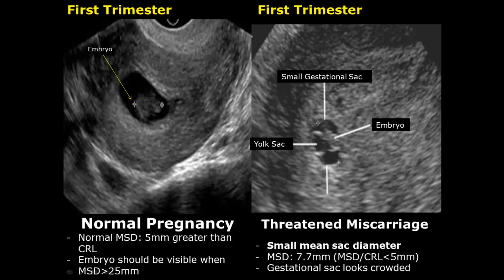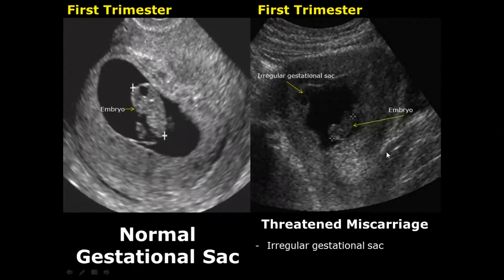The next feature is an irregular gestational sac. In the normal case, the gestational sac is very smooth, but in this case the inner walls are irregular.